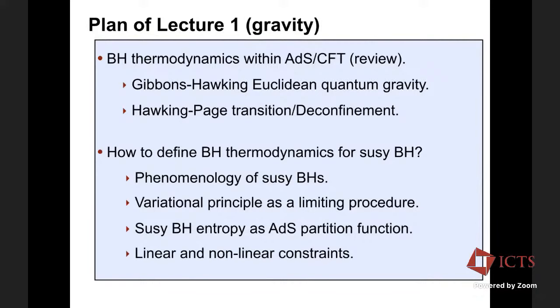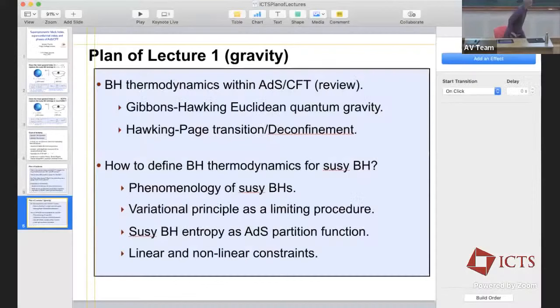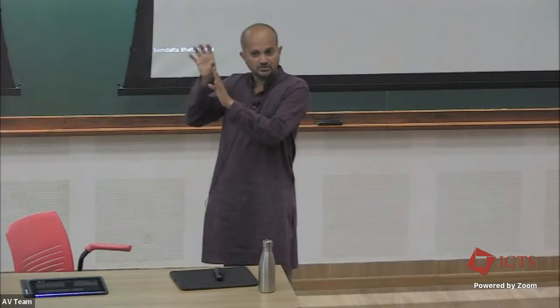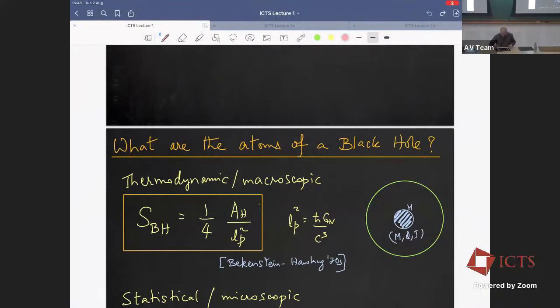Question from audience: The Witten index is supposed to count the ground state degeneracies of a theory. Is this in any way similar to the Witten index? Response: Yes, I will discuss this in great detail tomorrow. It's very much similar. The superconformal index is essentially some generalized version of the Witten index — you have trace minus 1 to the F times some operators which commute with the supercharge. It's some kind of generalization — this I'll discuss in detail tomorrow. So it doesn't count ground states of the system, but it counts BPS states — the same amount of supersymmetry that the black hole preserves.